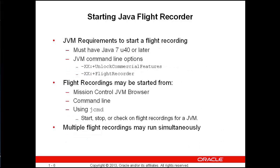To use Java Flight Recorder with Java 7 you need update 40 or later. The examples shown use update 45. You also need to use a couple of command line options when starting the JVM you want to monitor or record — specifically, you need to add the unlock commercial features and flight recorder flags as shown in the slide to enable those monitoring features. Flight recordings may be started from Mission Control, from the command line, or using JCmd, which is also included with Java 7, and you can easily start and stop recordings with it.